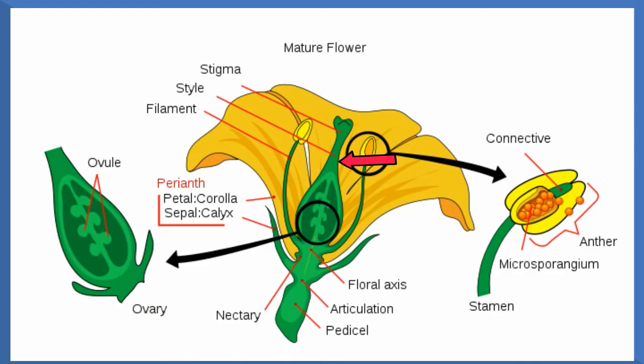The ovary is the base of the pistil and it holds the ovules awaiting fertilization. The ovules are the flower's eggs, located inside the ovary.